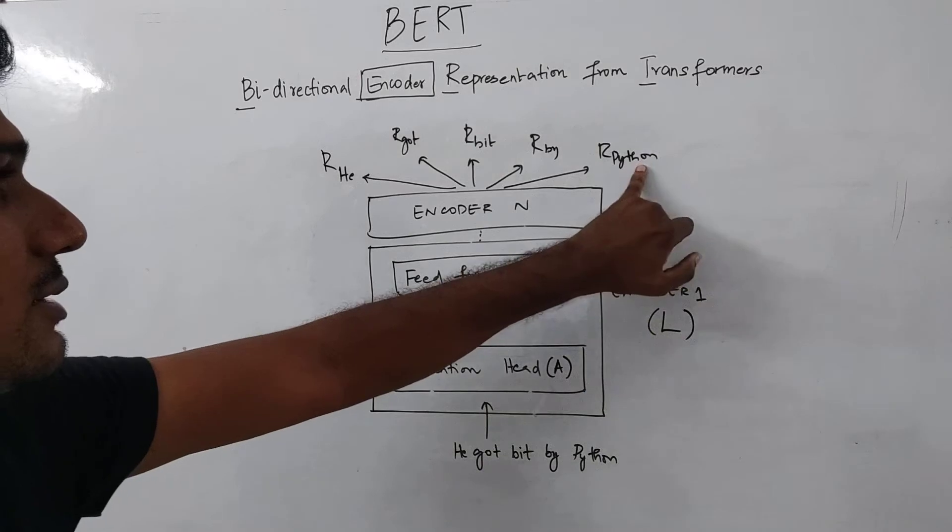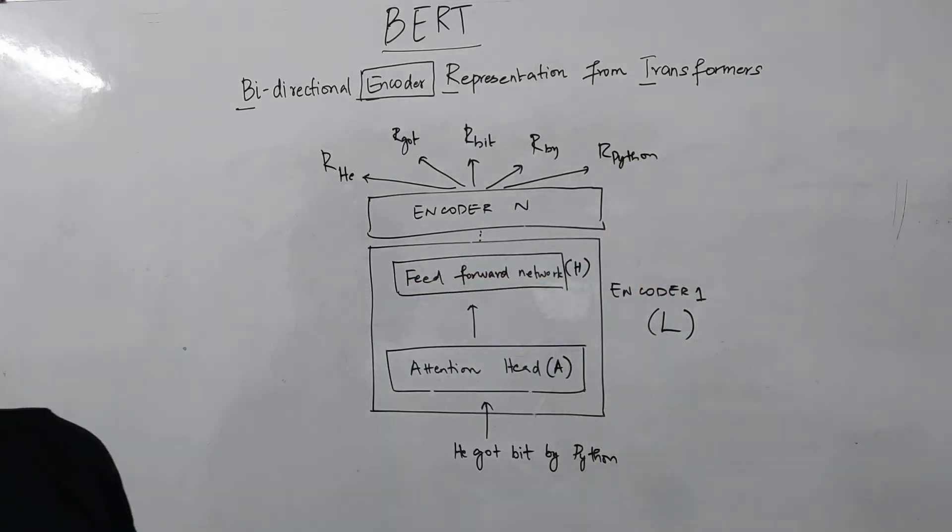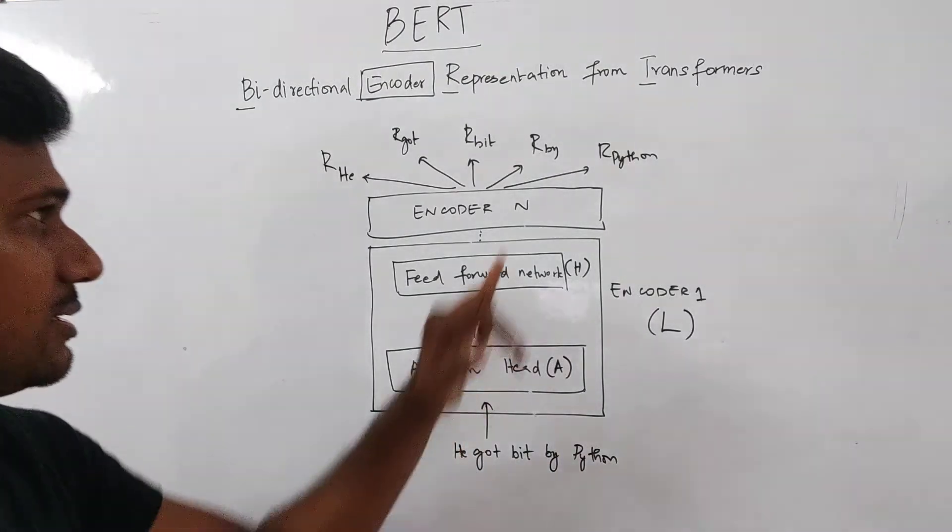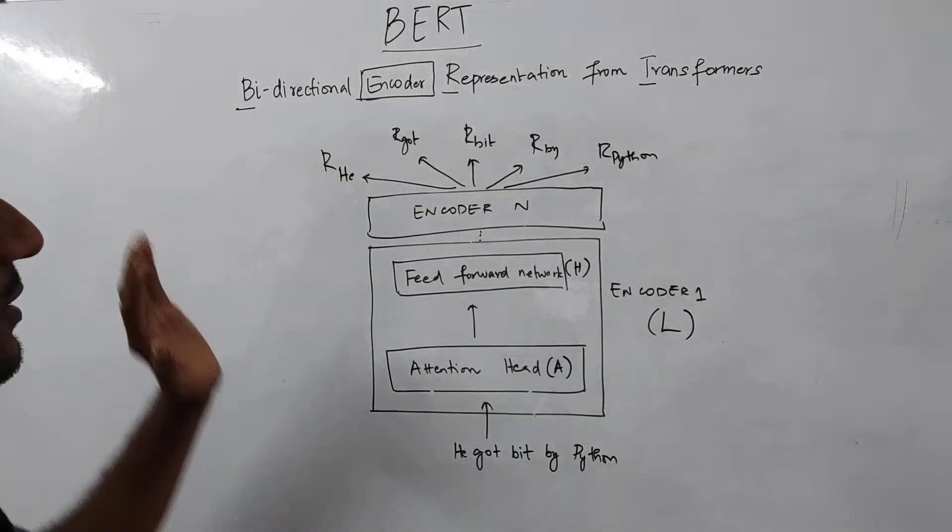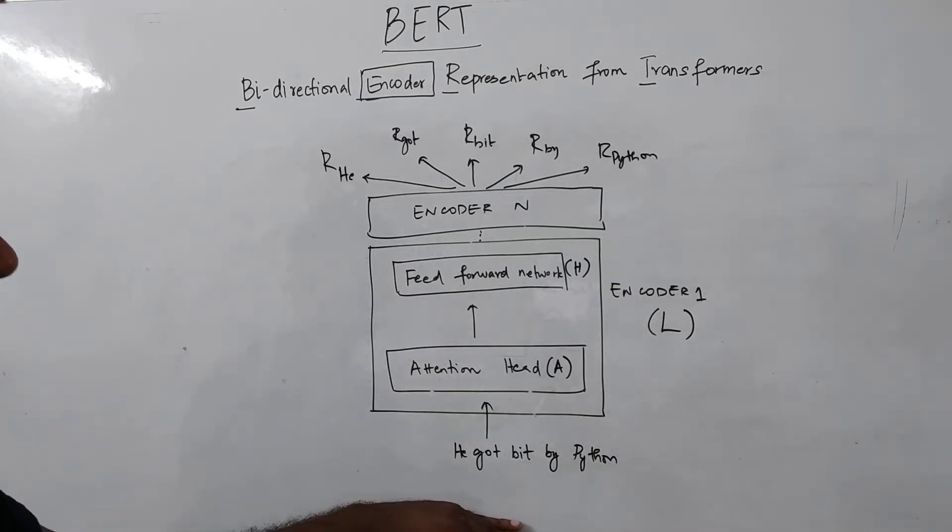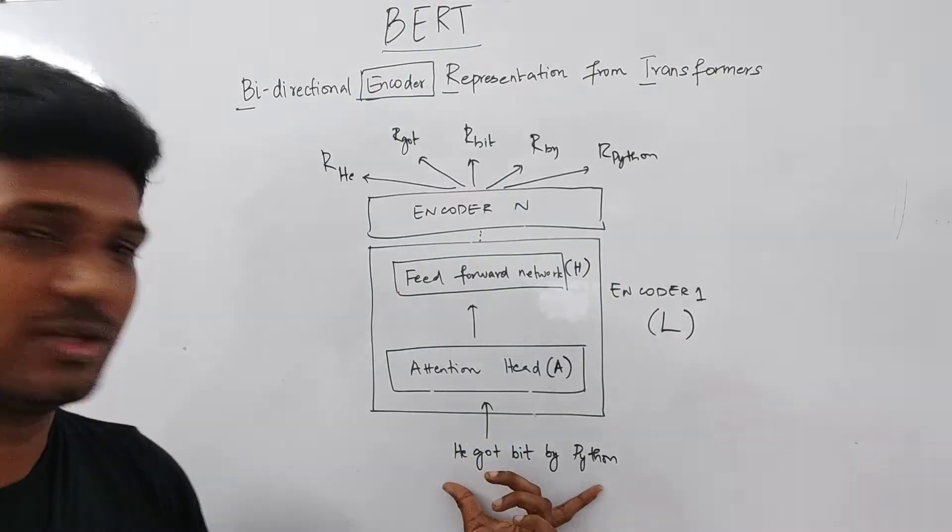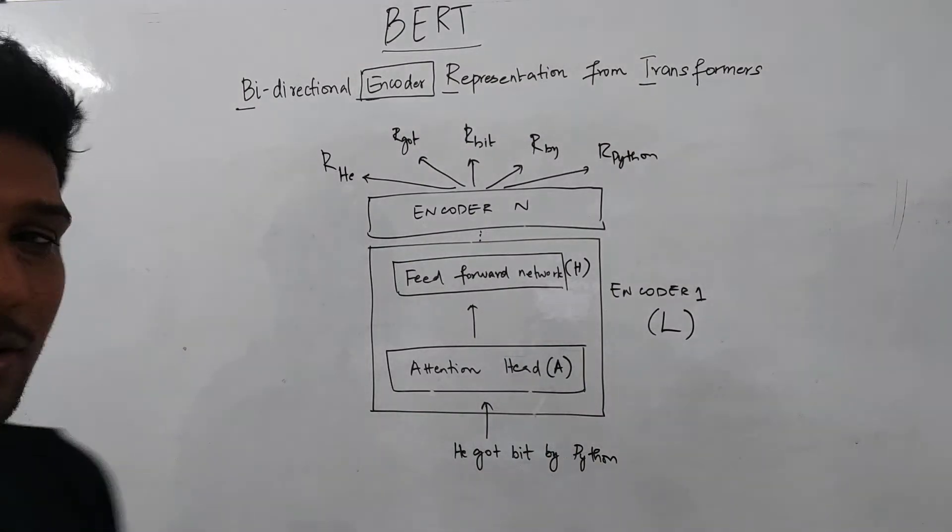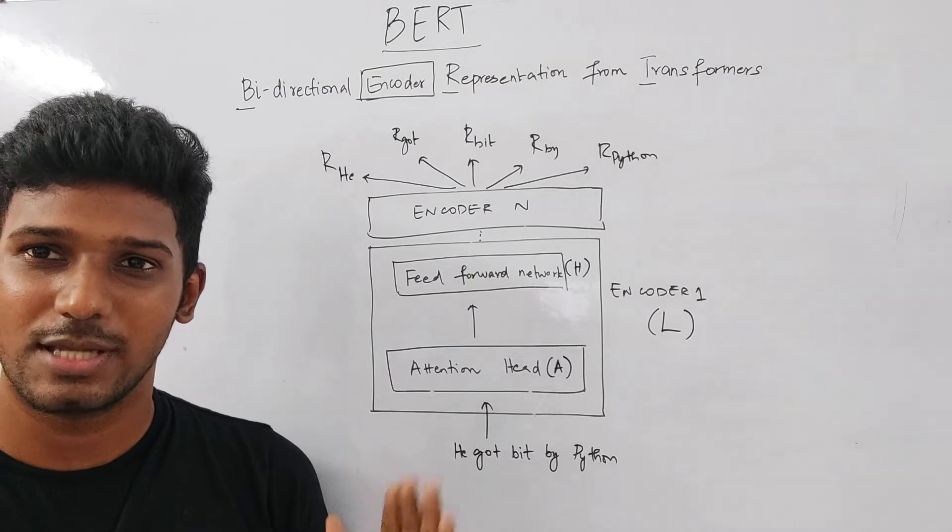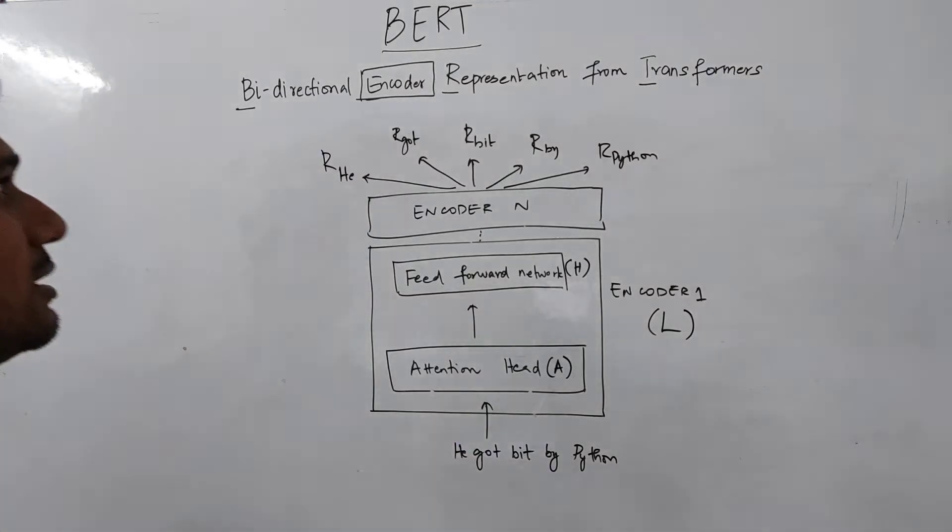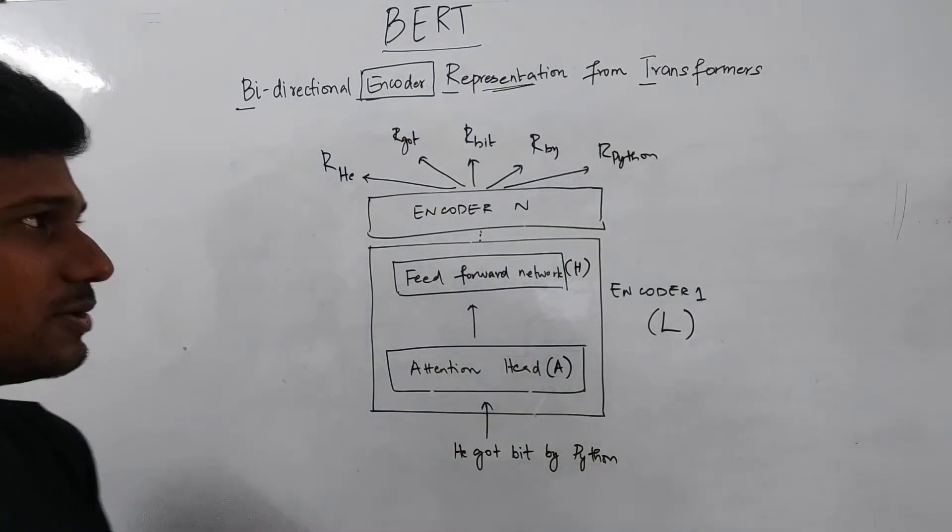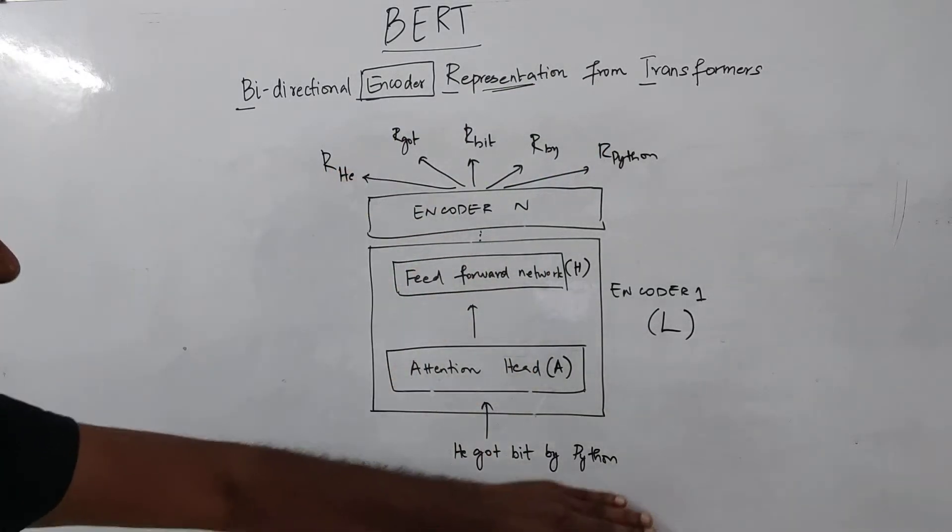So this word would carry some contextual information of the other words and how it relates to the other words in the sentence. So ultimately, what I'm trying to say is that BERT basically gives just the representation of the input sentence. And we need to fine tune on top of BERT for any NLP task that we need to do. BERT is just a representation. It does not do any task by itself. So it just gives the representation of the input sentence.